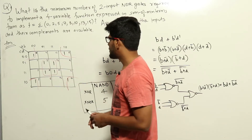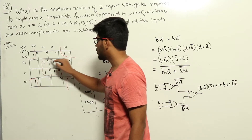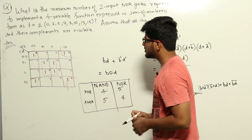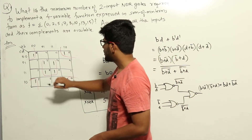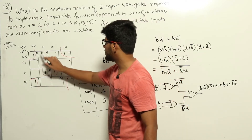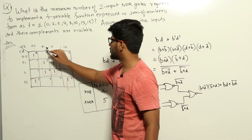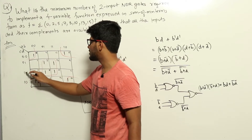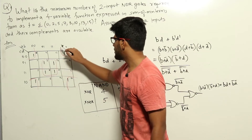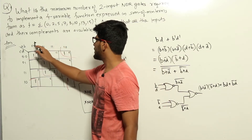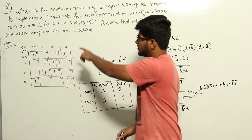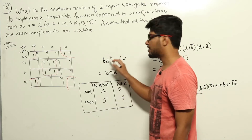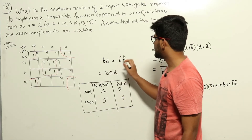We will find the prime implicants. These four ones can be grouped together, and these four ones can also be grouped together; there are no further groupings. For the first group, C changes from 0 to 1 and D remains constant at 1, giving us BD. For the second group, B remains constant at 0 (so B complement) and D remains constant at 0 (so D complement), giving B complement D complement.